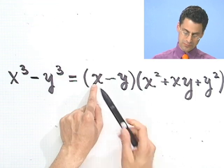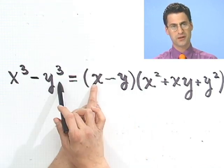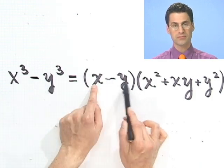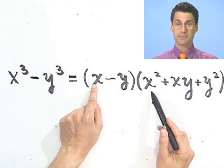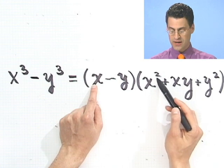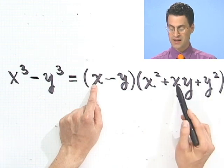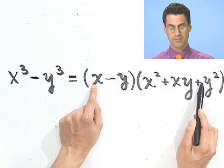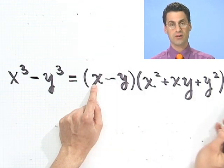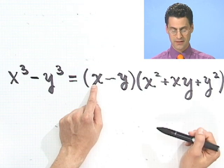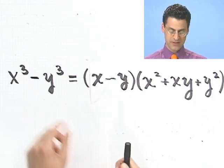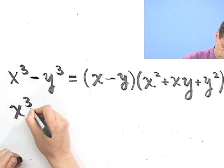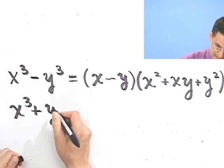One way of remembering it is to remember that when you have the difference of two perfect cubes, you're always going to have the number minus the number. And then what's going to be left is going to be x squared, then an xy, and a y squared. Everything has to be positive here, the plus signs have to be here between them, because this minus sign will take care of all the cancellation. That's the formula for the difference of two cubes.